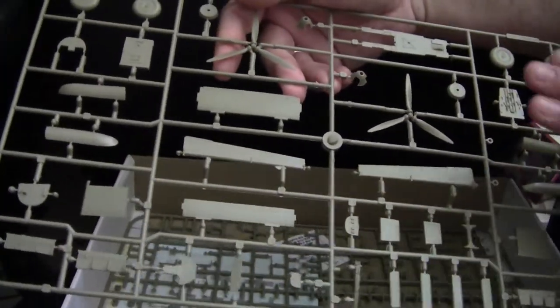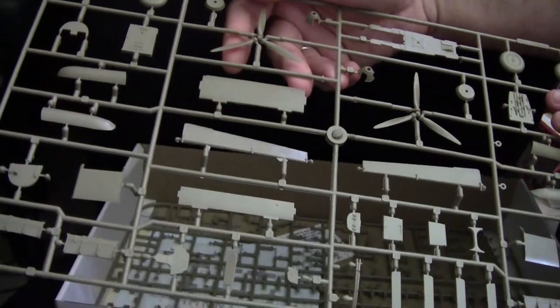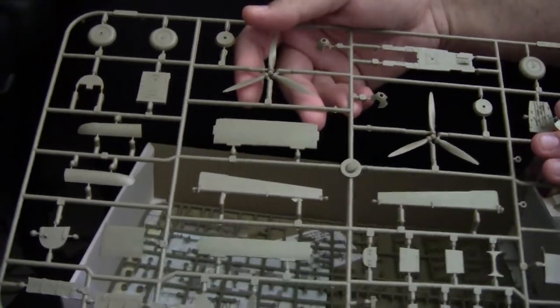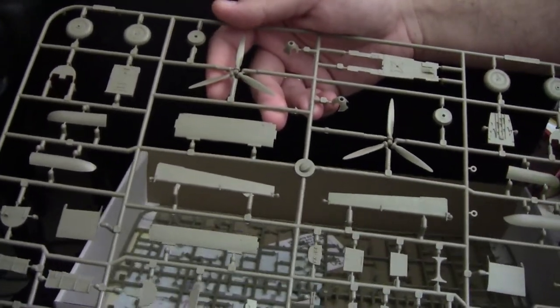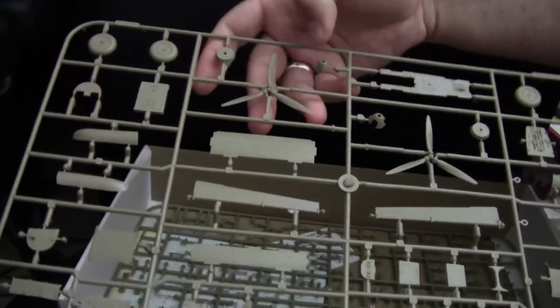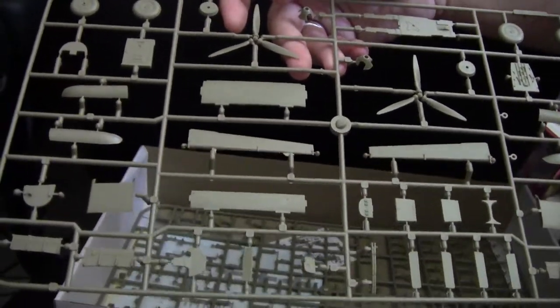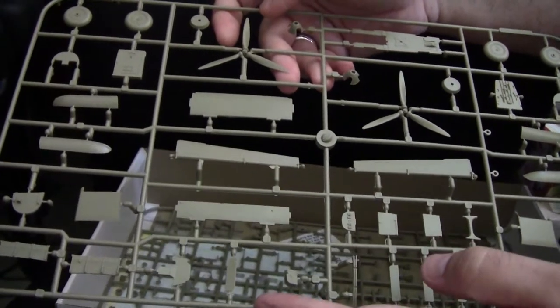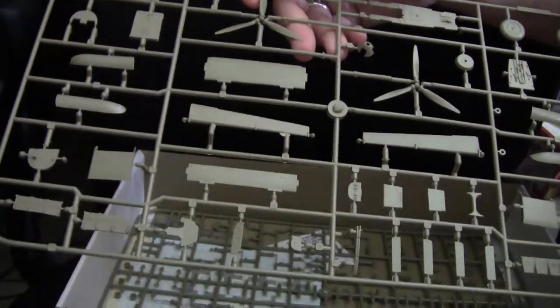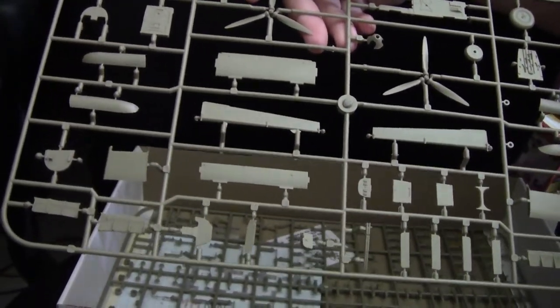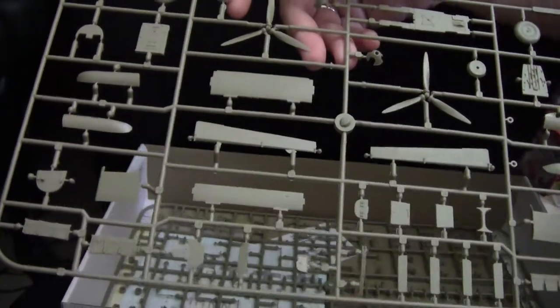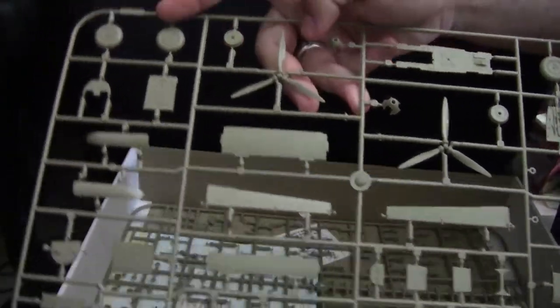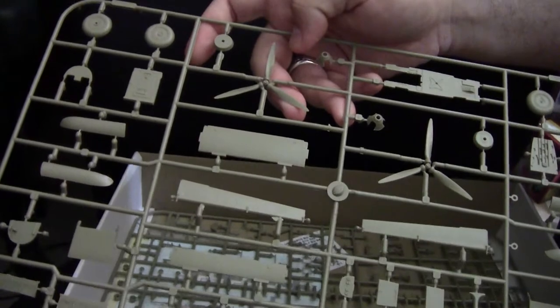This sprue gives us more cockpit parts. A different style of propellers. As well as, obviously, prop hubs for them. Gear bay doors. Another version of the instrument panel. Side inlets. And various other odds and ends. As well as our main gear wheels.